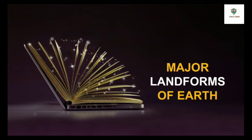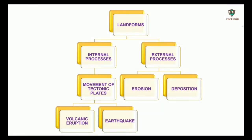What do you understand by the word landform? Landform means any feature on the Earth's surface, like mountains, hills, plateaus, ridges, cliffs, plains, volcanoes, etc. These landforms are the result of two processes: internal processes and external processes.